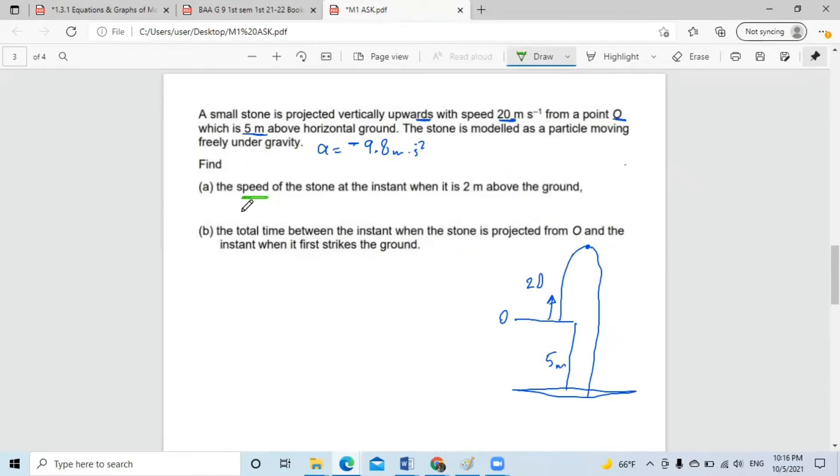What they ask. Find the speed v of the stone at the instant when it is two meters above the ground. This is two meters above the ground.